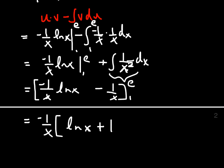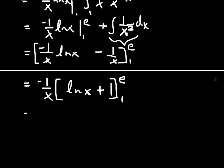By factoring out negative 1 over x, be careful though, you're not factoring out a constant, you just factored out a term that has x in it. So we get, I'm going to have to plug into that as well, so we get negative 1 over e times the ln of e plus 1.